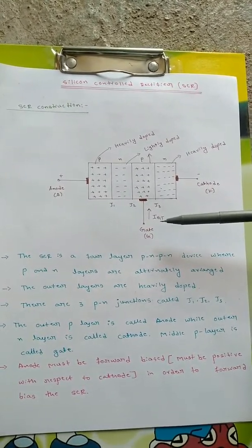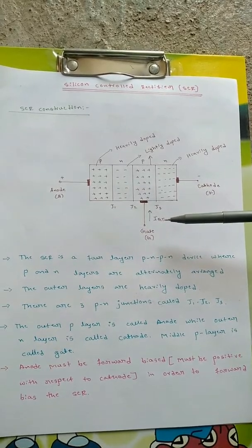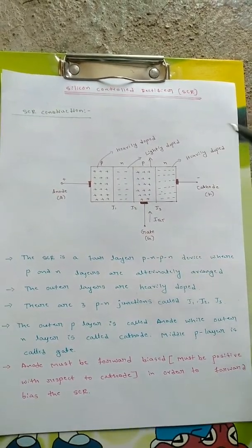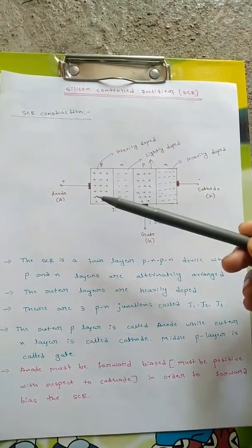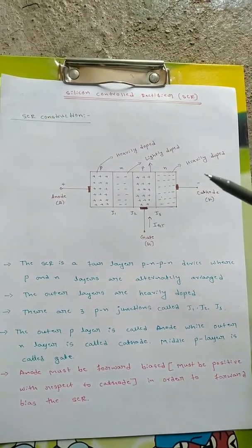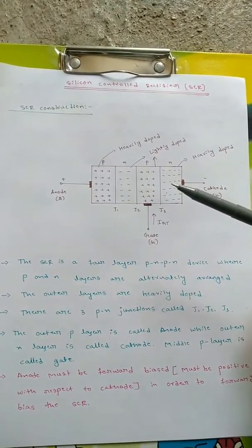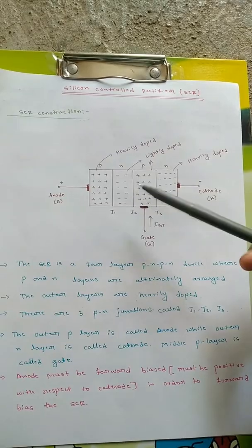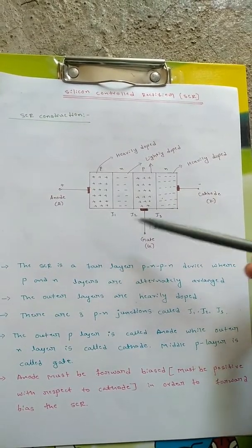The current flowing through the gate will be IG, the gate current. The anode is positively charged and the cathode is negatively charged here. There are totally three junctions due to the four parts.